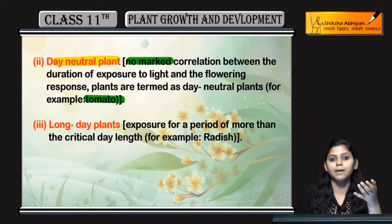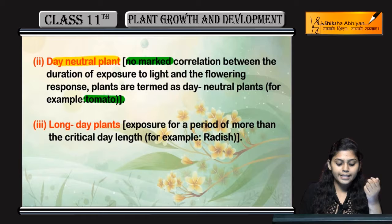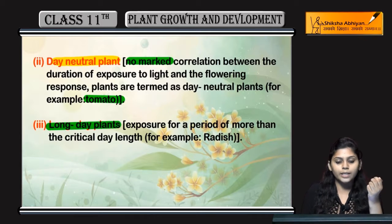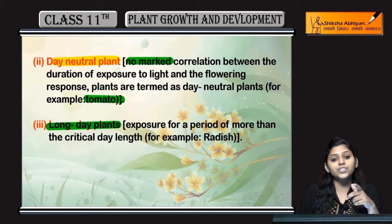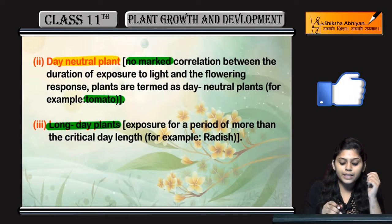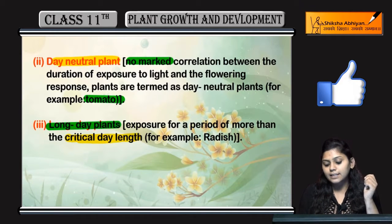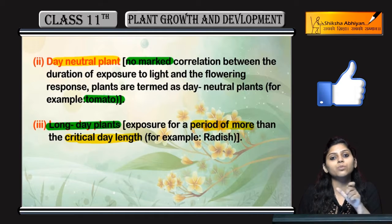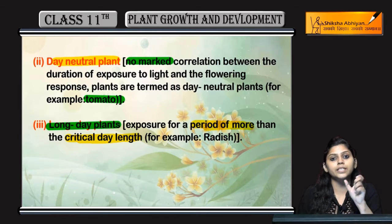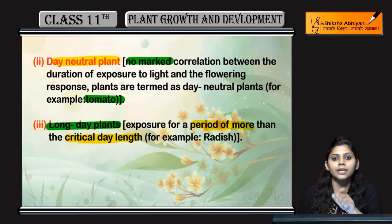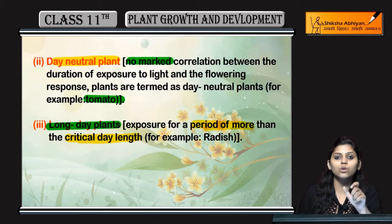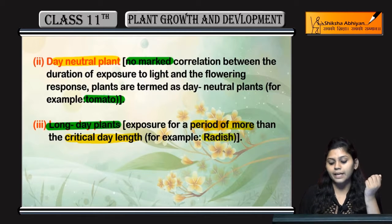An example of a day neutral plant is tomato. Next are long day plants, which means that the exposure of photoperiod needs to be longer than the critical day length. So they are long day plants.